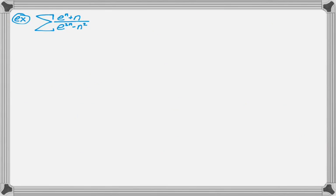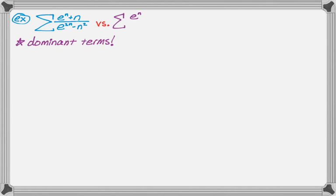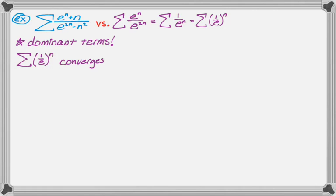For the last example, we have the sum of (eⁿ + n) over (e^(2n) − n²). This one's a little different because it doesn't look like a p-series. But thinking about dominant terms: in the numerator eⁿ is way bigger than n, and in the denominator e^(2n) is really dominant. So we compare to eⁿ over e^(2n), which is the sum of 1 over eⁿ, or equivalently the sum of (1/e)ⁿ — a geometric series. It's convergent because the ratio is 1/e, which is less than 1.